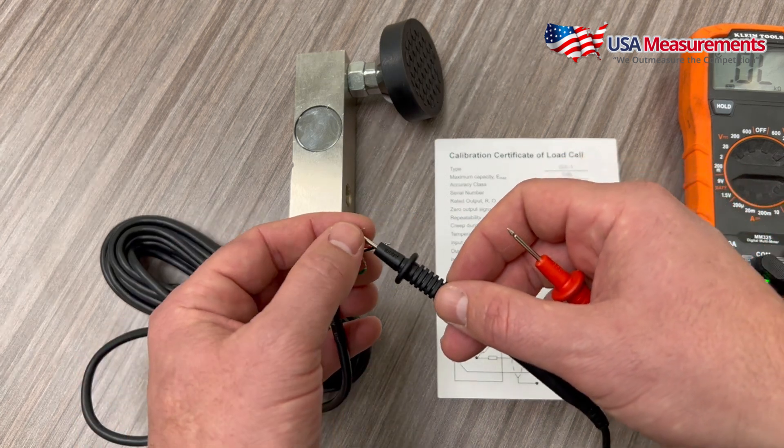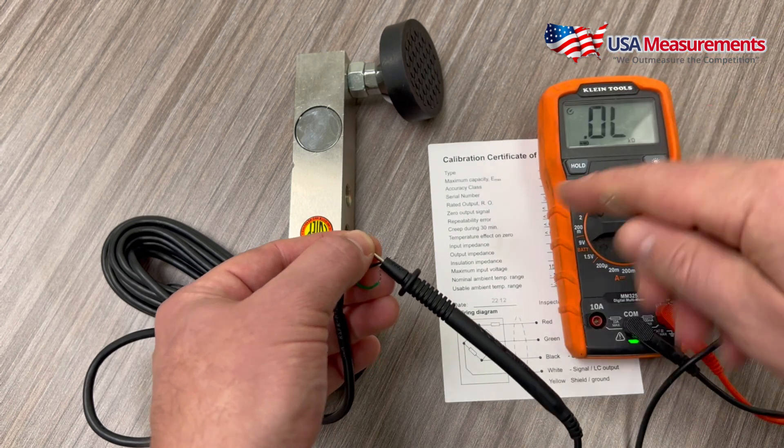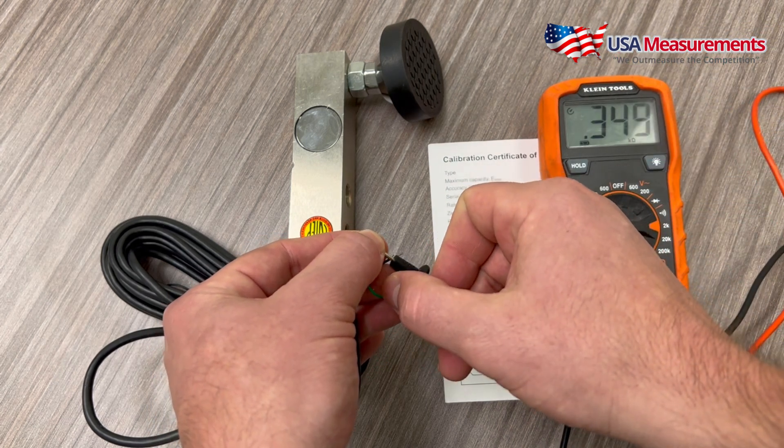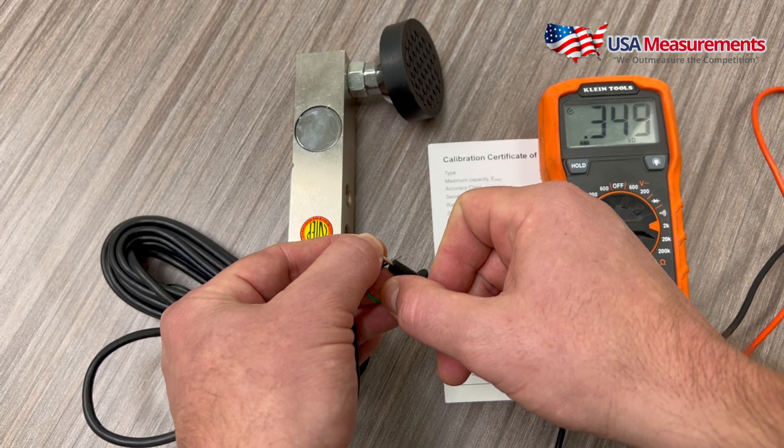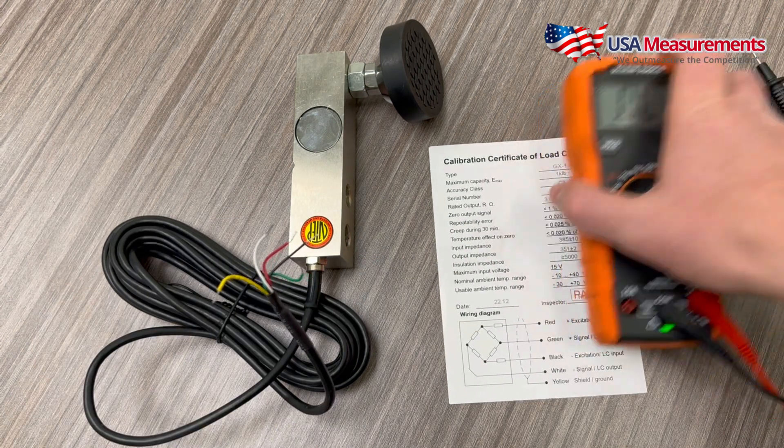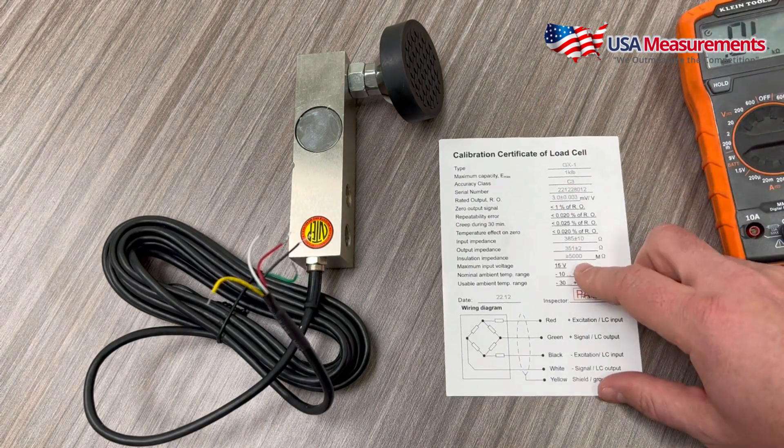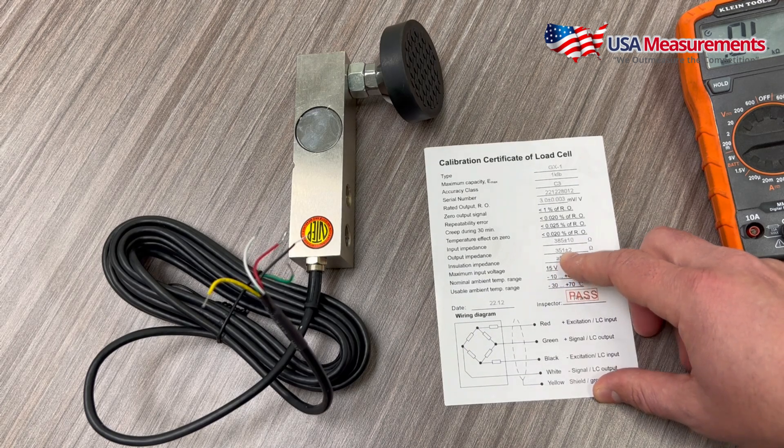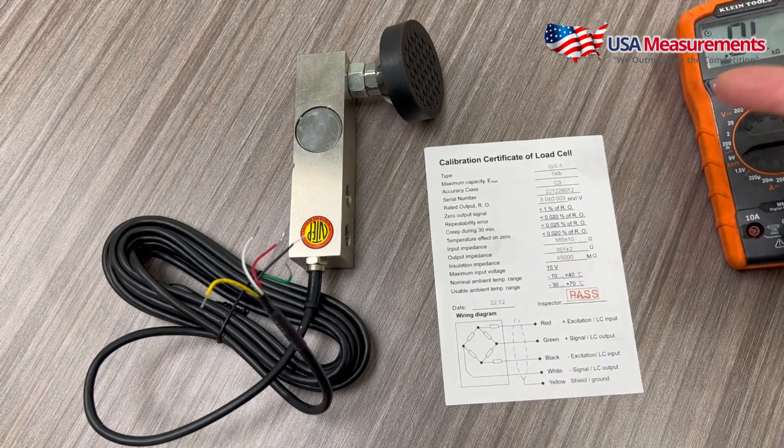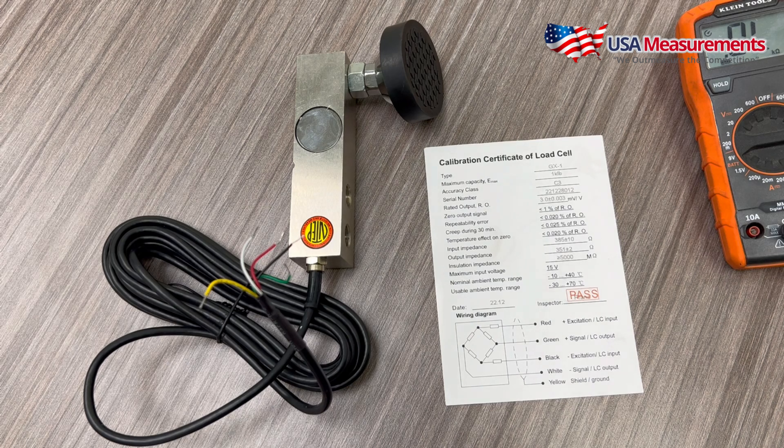white wire for negative and our green wire for positive. And that is 349, and again just taking a look here at our output impedance is 351 plus or minus 2 ohms. So this is a good working load cell. If you do have any questions on how to test